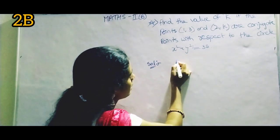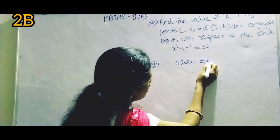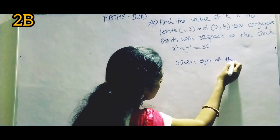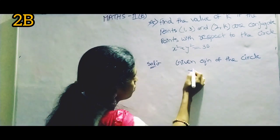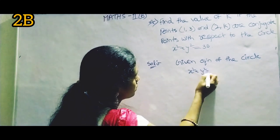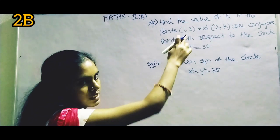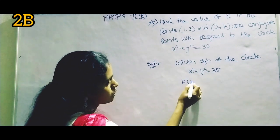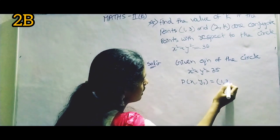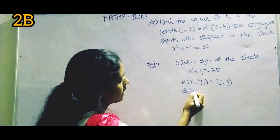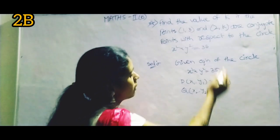Given equation of the circle: x² + y² = 35. Given points P(x₁, y₁) = (1, 3) and Q(x₂, y₂) = (2, k).